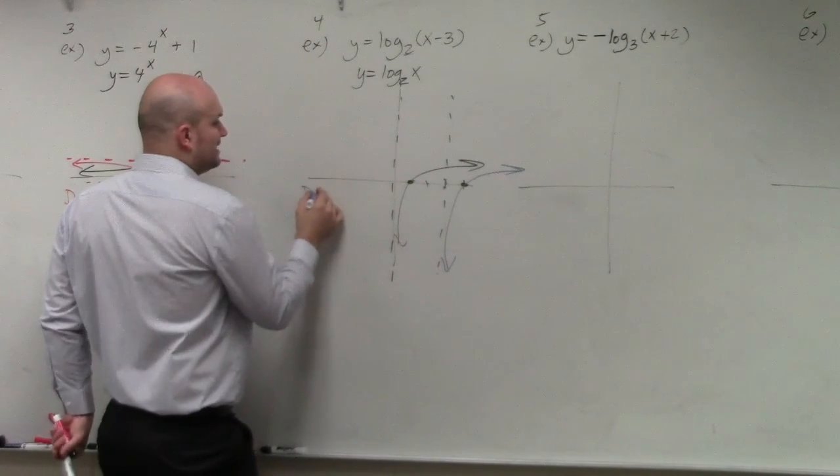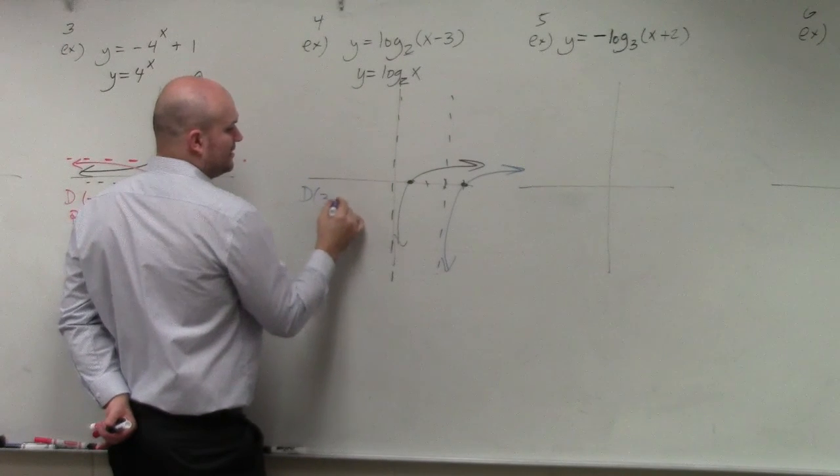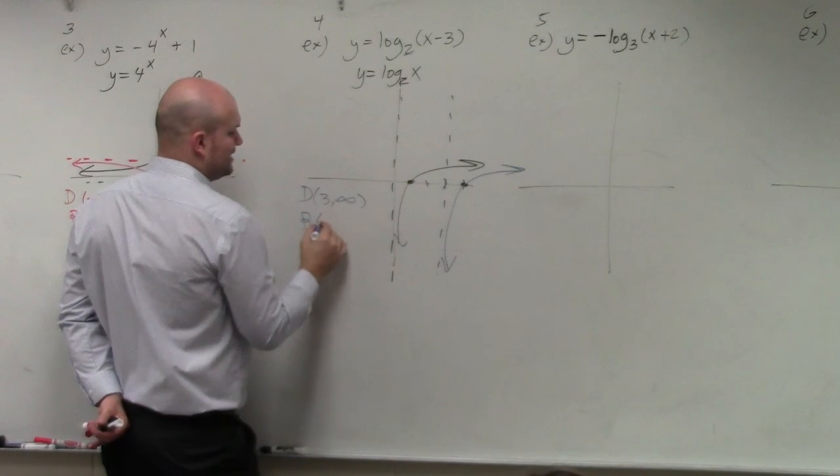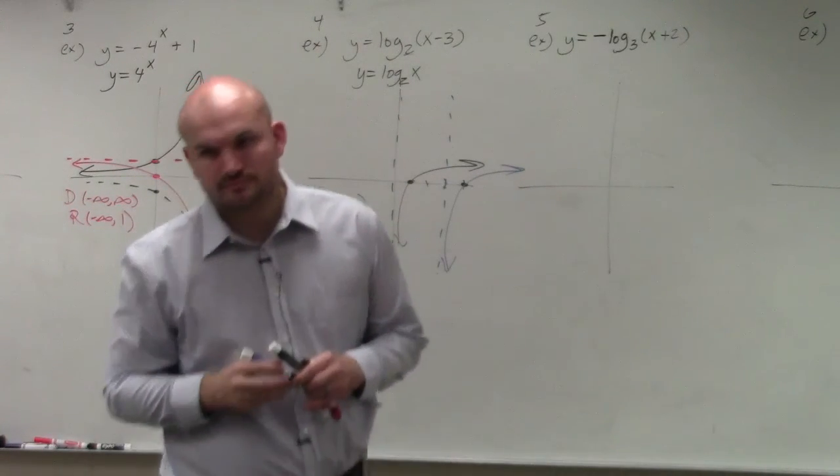So therefore, the domain is now from the asymptote over. So that's going to be from 3 to infinity. And the range is negative infinity to infinity. OK?